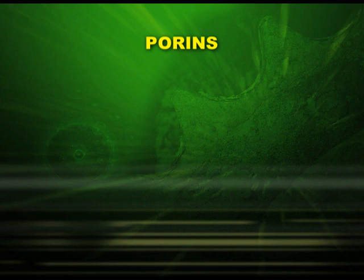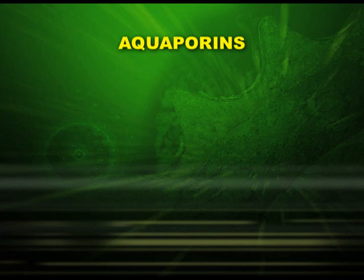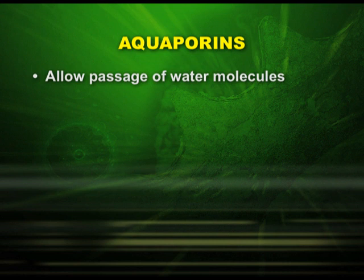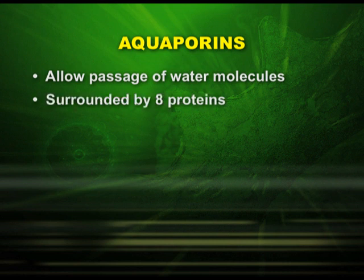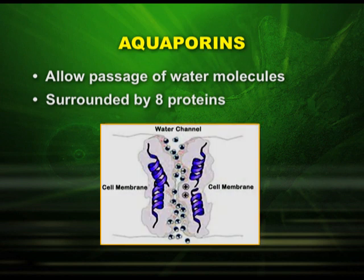Let us talk about porins. Porins are large transporter proteins which create huge pores in the outer membrane of plastids, mitochondria, and bacteria. In the types of porins, we have aquaporins. These aquaporins, as the name indicates, allow passage of water molecules, surrounded by eight proteins. A picture clearly shows how the water channel is created by aquaporins.